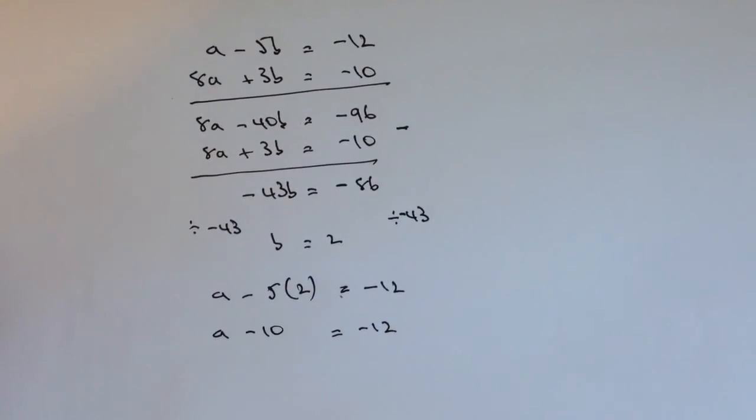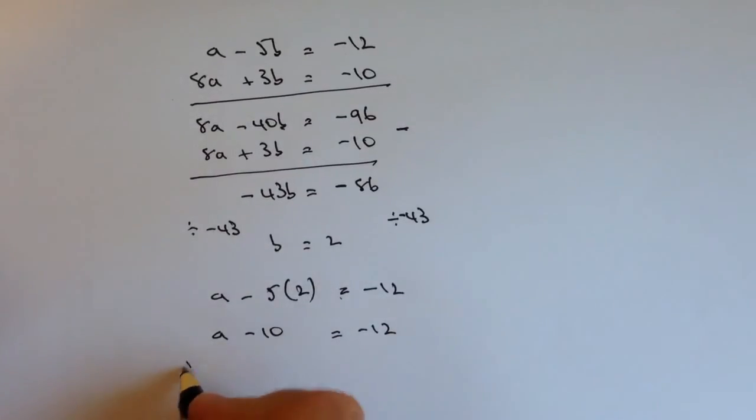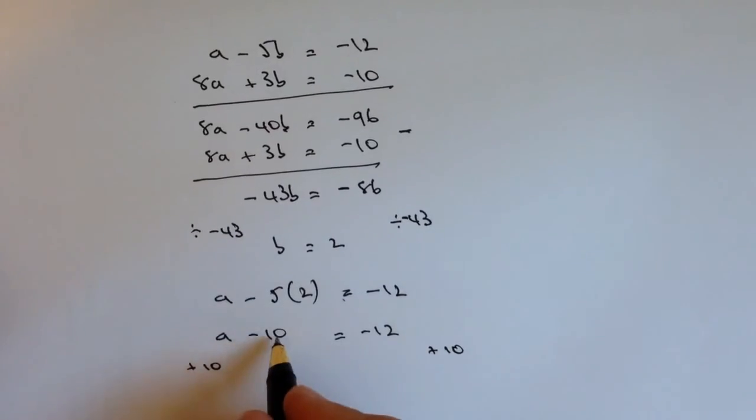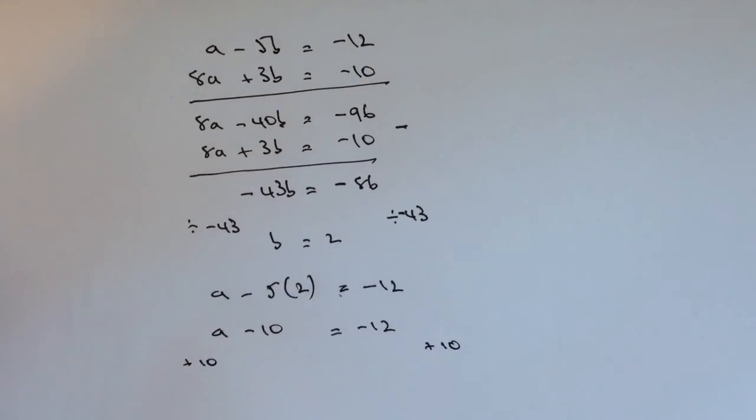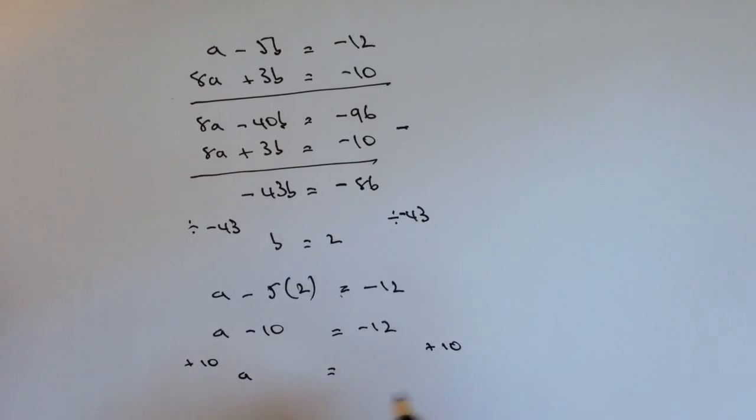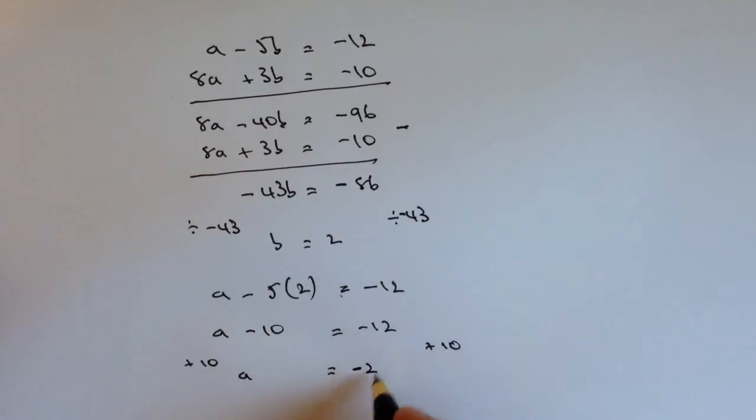Okay, so in order to get a on one side, it's a straightforward linear equation. So I'm just going to add 10 to both sides. And if I do that, that -10 and that positive 10 become neutral. And I get a = -12 + 10. Well, that's going to be -2.